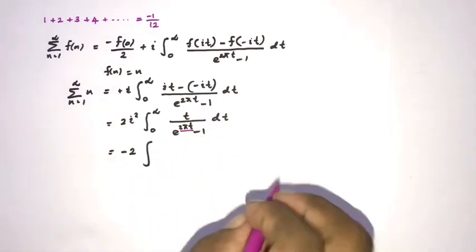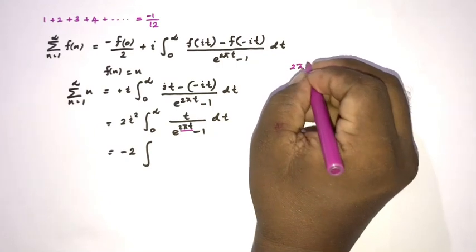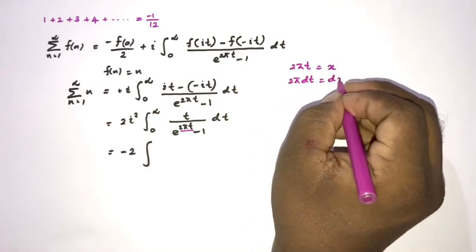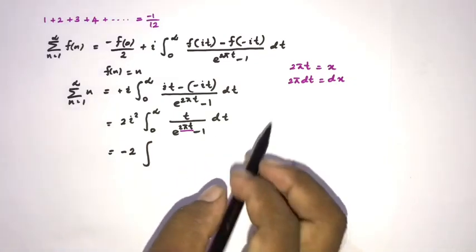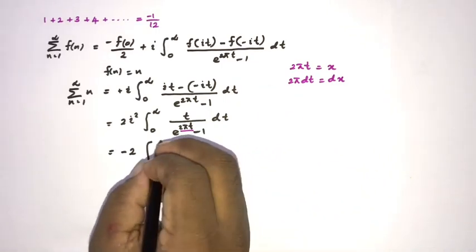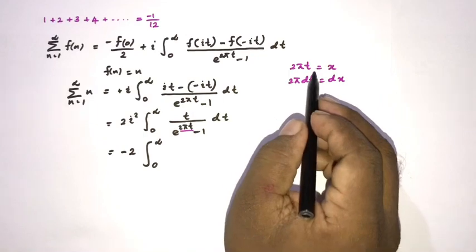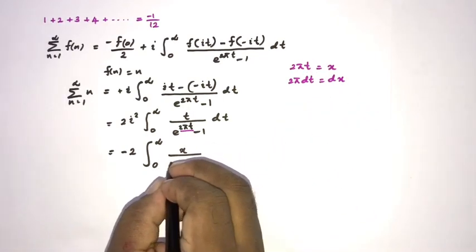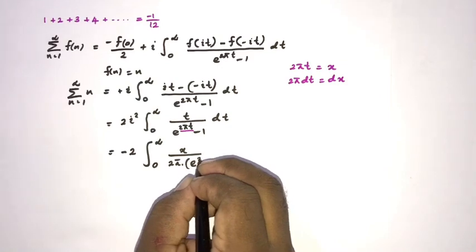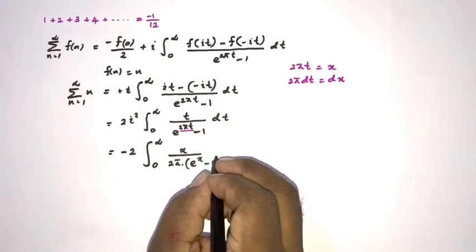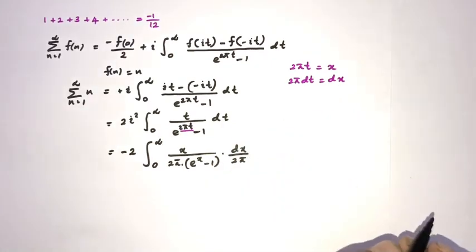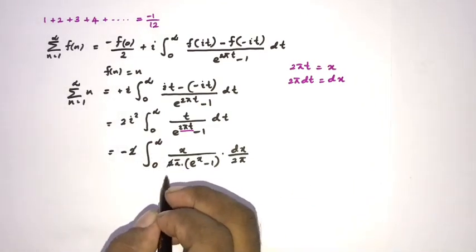Now I make the substitution 2πt = x, so differentiating gives 2π dt = dx. The limits remain 0 to infinity. Therefore t = x/(2π), e^(2πt) becomes e^x, and dt = dx/(2π).